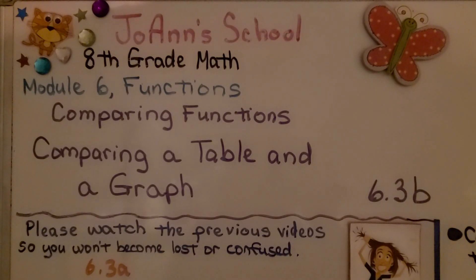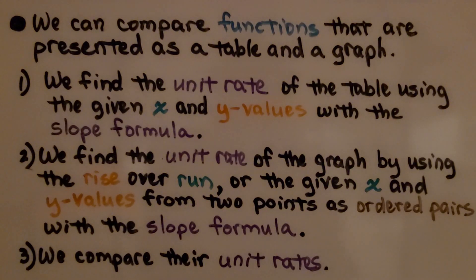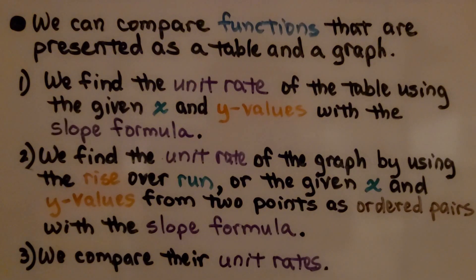Comparing a table and a graph, Lesson 6.3b. We can compare functions that are presented as a table and a graph. We find the unit rate of the table using the given x and y values with the slope formula. We find the unit rate of the graph by using the rise over run, or the given x and y values from two points as ordered pairs with the slope formula. We then compare their unit rates.